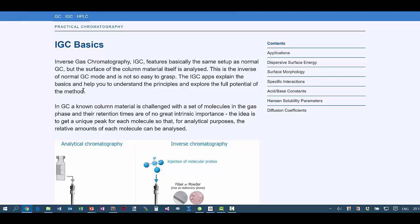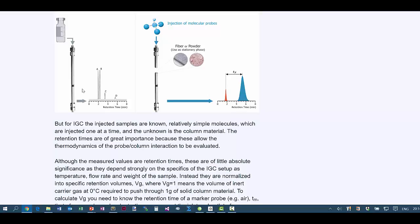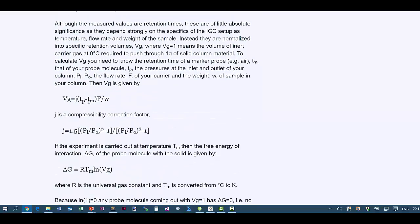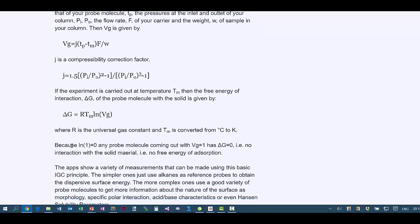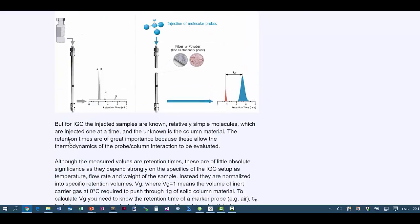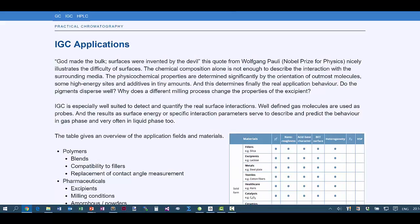And this just tells you what I've described before about the differences and where Vg comes from. And it gives you a formula for J and reminds you about delta G. So that's fine.